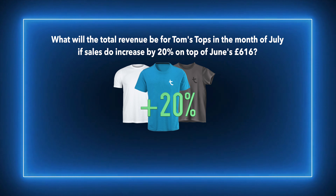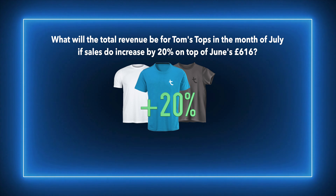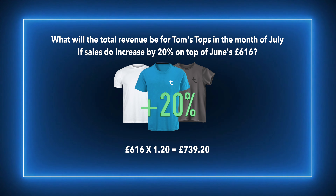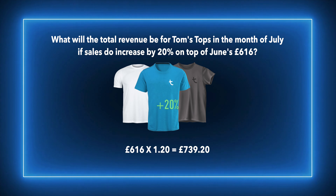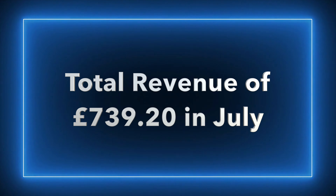In June the total revenue was £616 and Tom is predicting a 20% increase. All you need to do is put £616 into your calculator and multiply it by 1.20 — this will add 20% on top of £616. So the predicted total sales revenue for Tom's Tops in July is £739.20.